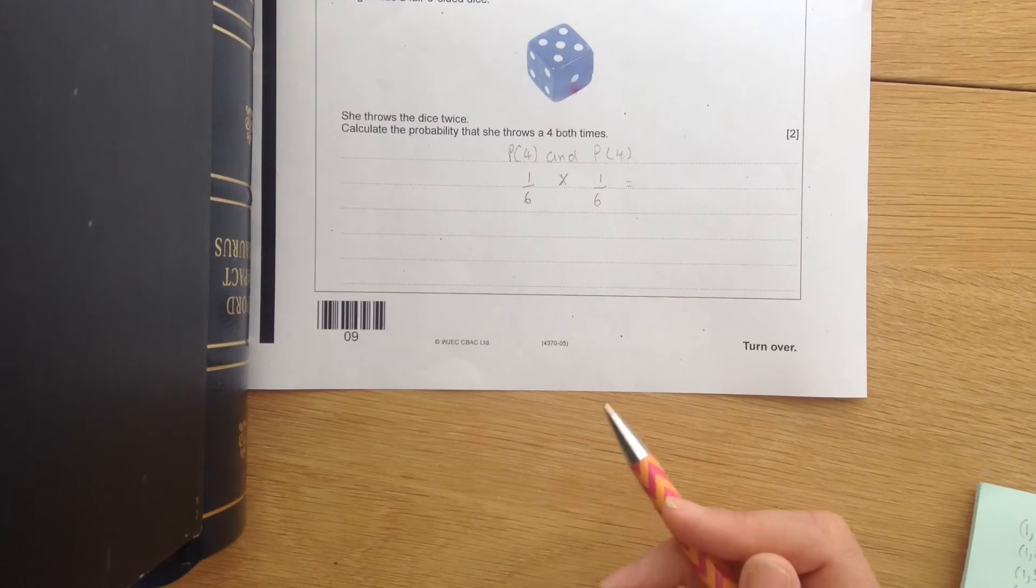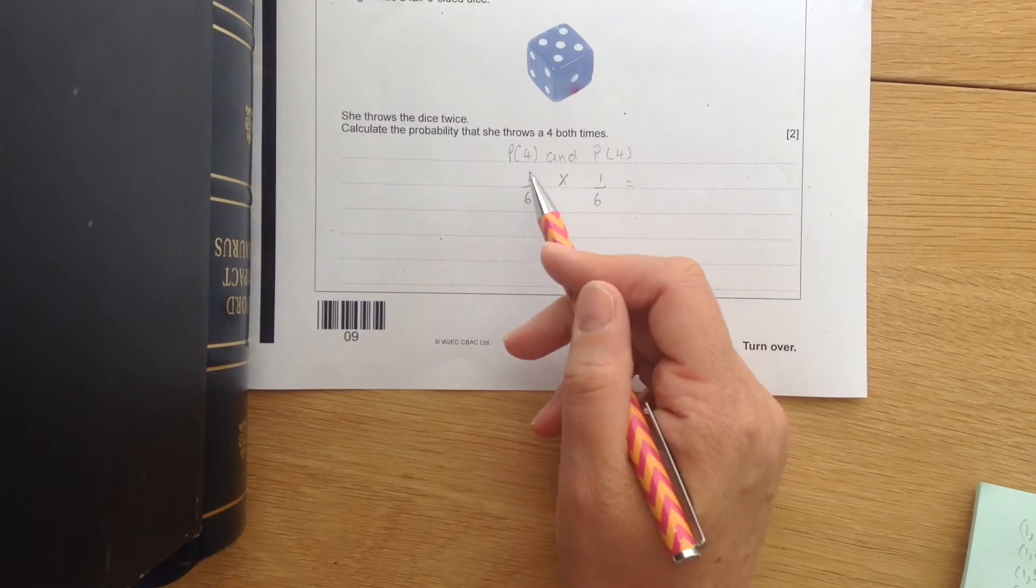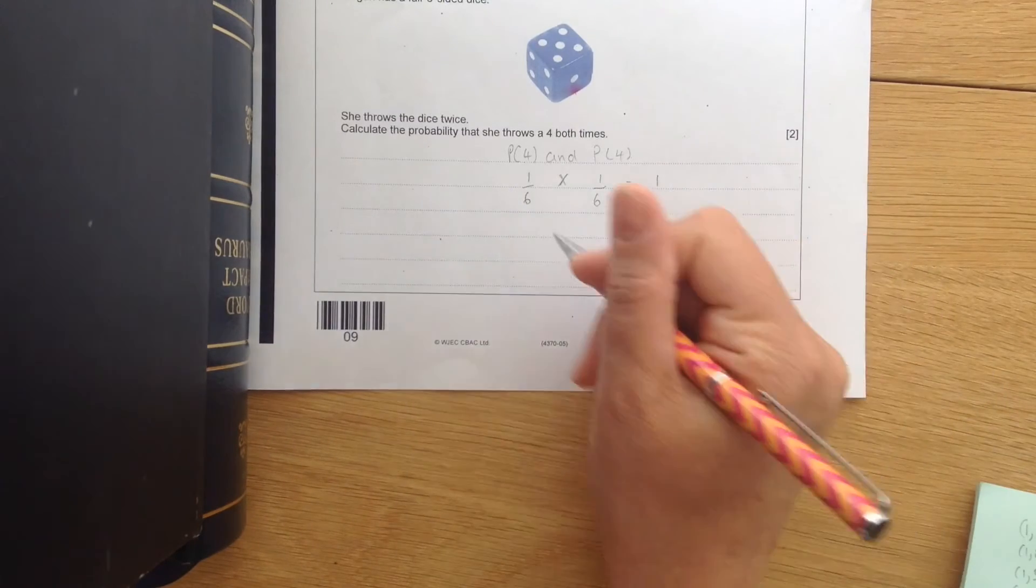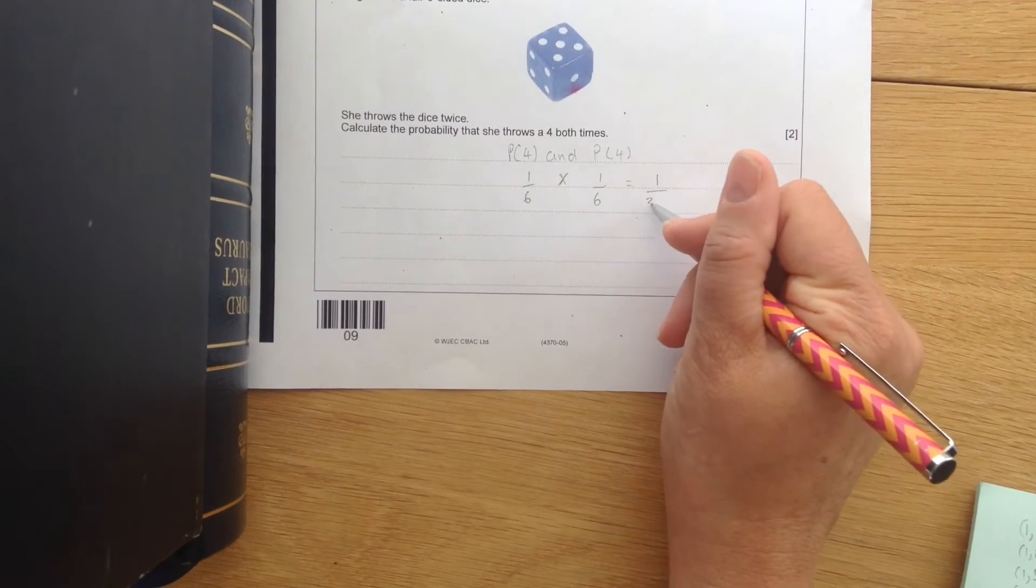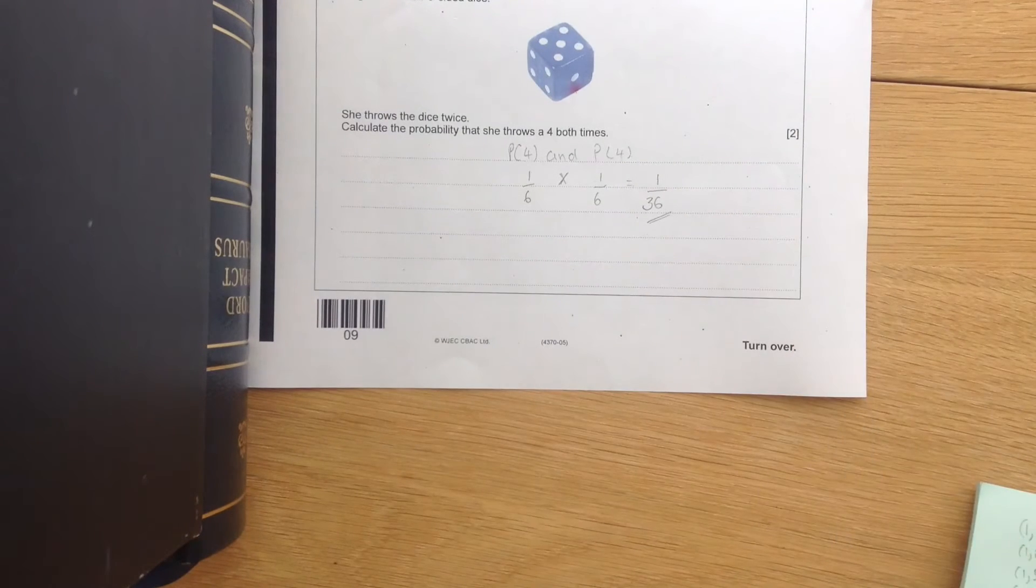Okay, multiplying the two fractions together. One times one is one. Six times six is thirty-six. So the probability of getting a double four is one over thirty-six.